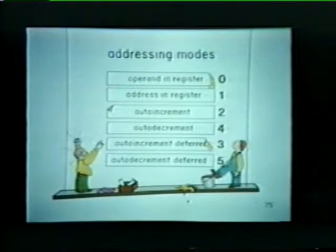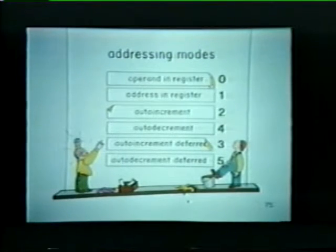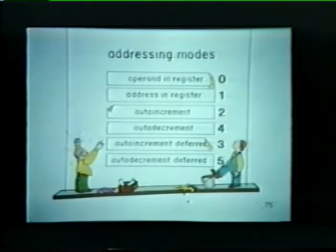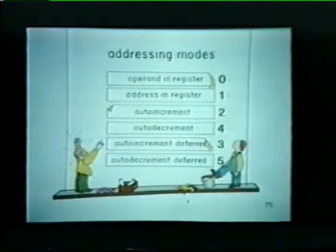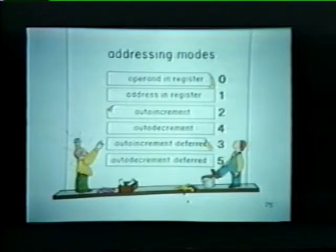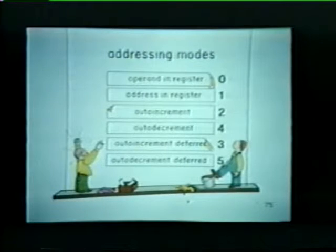Addressing modes 2 and 4 can be used if we're working with lists or tables of operands that are stored in consecutive locations. On the other hand, if a list of operands is not stored in consecutive locations, we can select addressing modes 3 or 5.